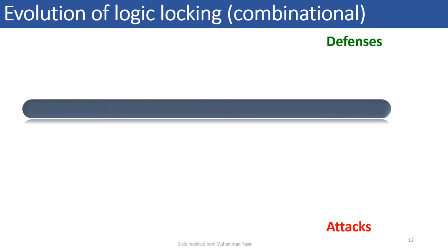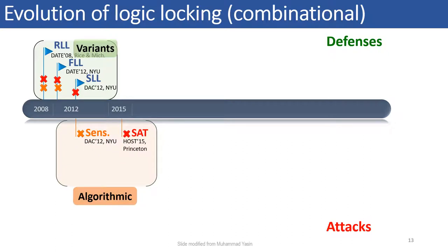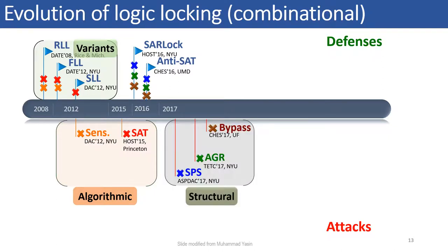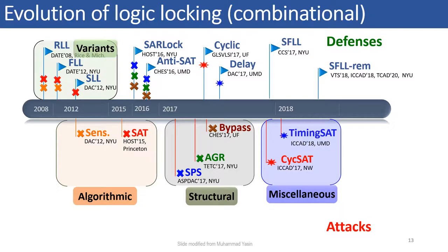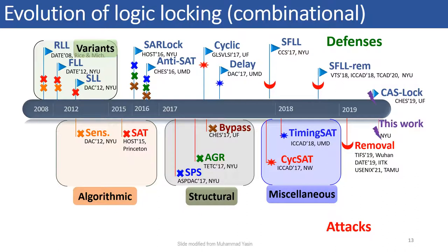There has been an extensive research work going on in the domain of logic locking since more than a decade. With early efforts in developing high output corruption schemes such as RLL, FLL and SLL which were subsequently broken by algorithmic attacks exploiting the high output corruption property of these different schemes. Later, point function based solutions were proposed which pushed the efforts of these algorithmic attacks to exponential limits. However, even such techniques were short lived and exploited by structural and miscellaneous attacks. Logic locking research then saw a plethora of defense and attack works. Recently, a new logic locking defense was proposed called CASLOCK which we consider in this work.